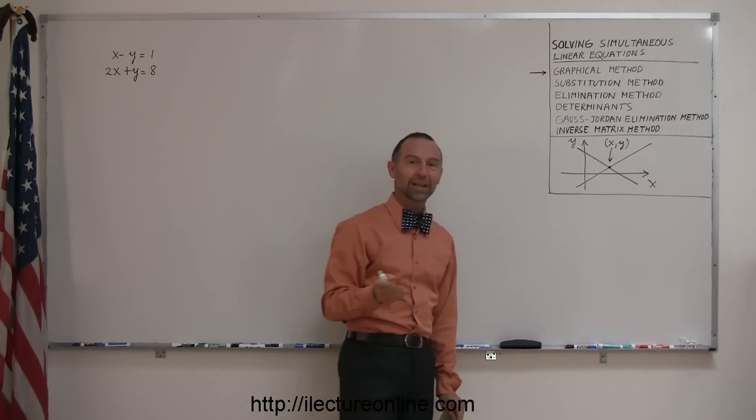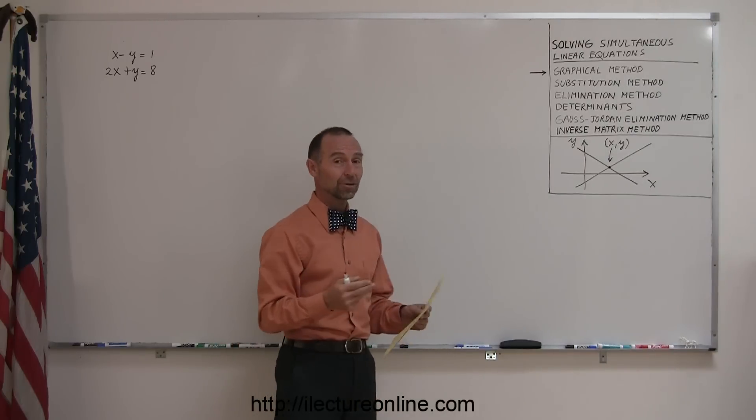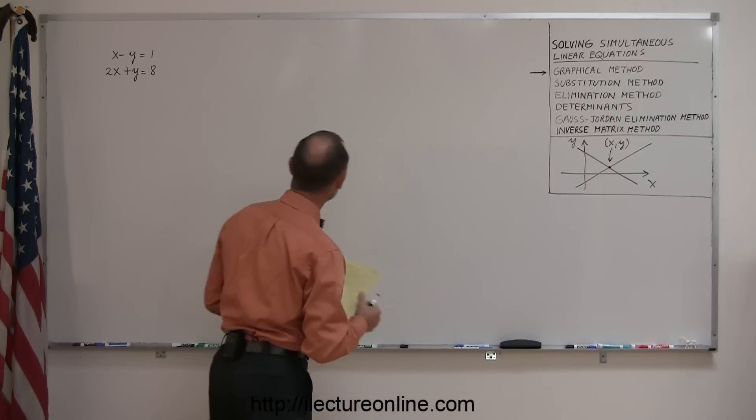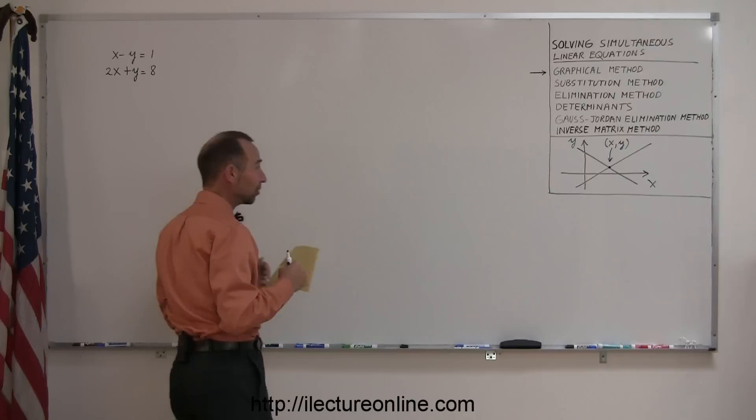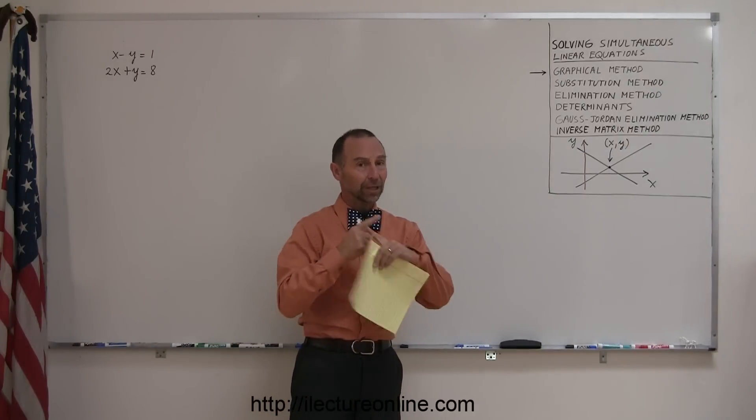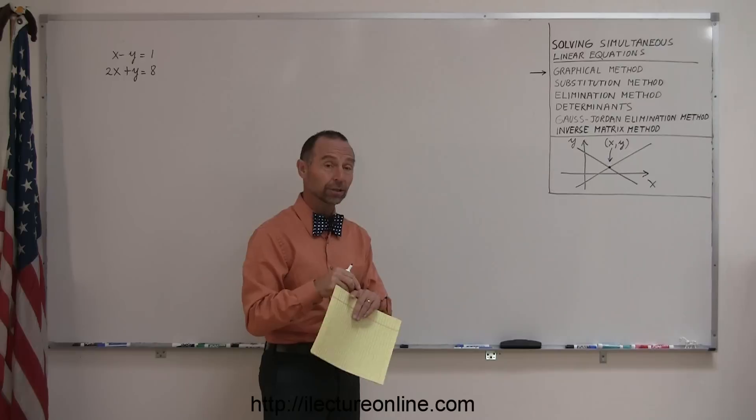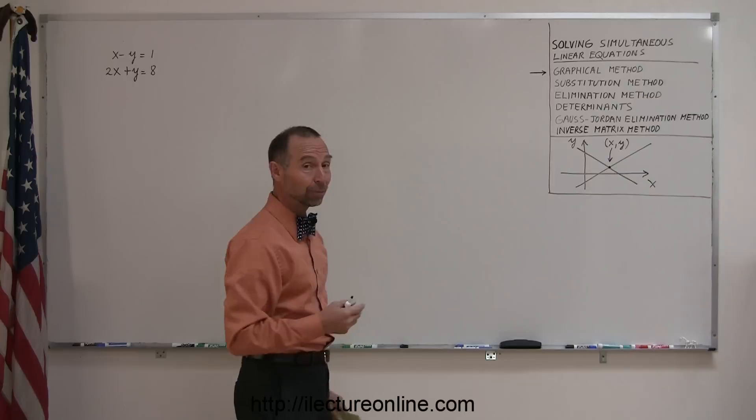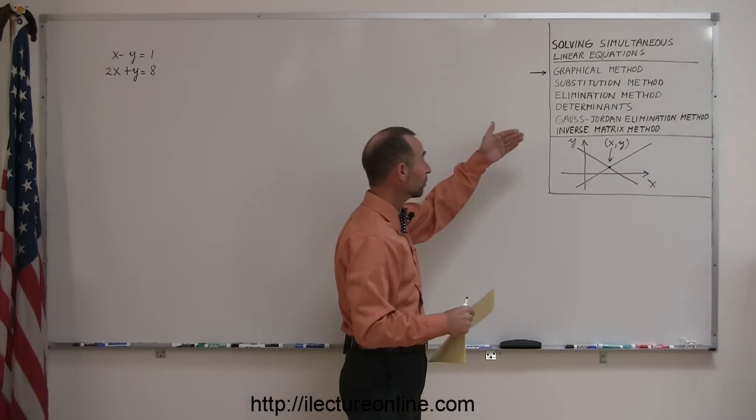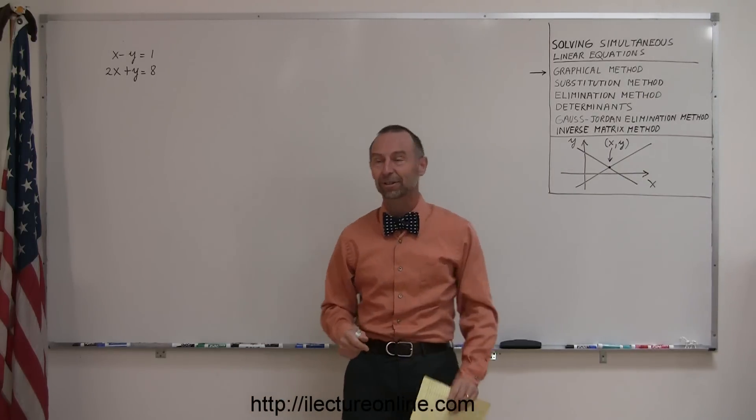And of course, that point will have an x and a y coordinate. So the whole thing that we're trying to do here is to take two equations, and here's an example of two equations, and find the place where they cross and find the x and the y coordinate of that particular point. All right, so let's go ahead. We'll go through each one of these methods, and we'll start off with the graphical method.